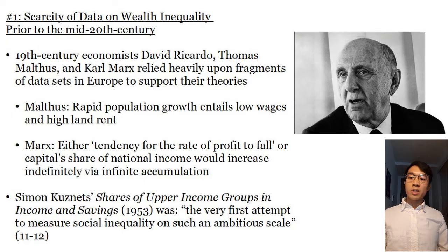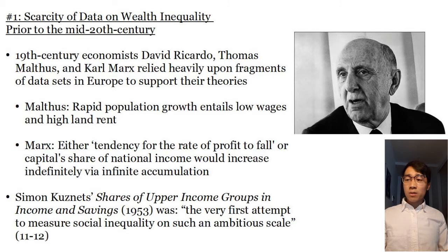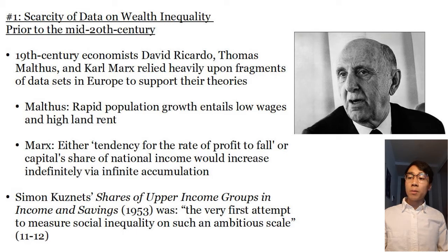In attempting to provide an explanation for these phenomena, Piketty makes 10 claims in his book. First, there was a relative scarcity of data on wealth inequality prior to the mid-20th century. For example, there were many 19th century economists like David Ricardo, Thomas Malthus, and Karl Marx who relied heavily upon fragments of data sets in Europe to support their theories. Malthus claimed that rapid population growth entails low wages and high land rent. Marx claimed that either the tendency for the rate of profit to fall would be so great that capitalism would combust, or capital's share of national income would increase indefinitely via infinite accumulation.